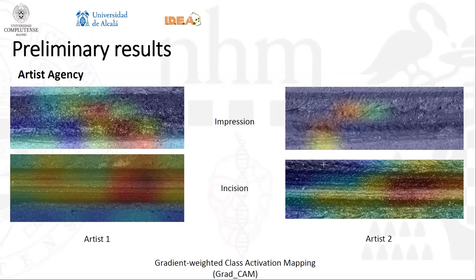Finally, we ran a GradCam algorithm on some of the images to understand the model's decisions. GradCam highlights the areas of the image being used by the model to classify the image. These images inform us that the model was looking mainly at the inner groove to make a classification, but also at the shoulder of the marks, which turns out to be really informative regarding the decorative technique used — impression versus incision. For the impression samples, the algorithm was using the shoulder, probably to separate incision from impression, and also the walls of the groove, which could be related to different depths of the marks depending on the pressure exerted by the two different artists.